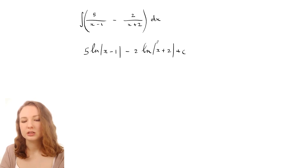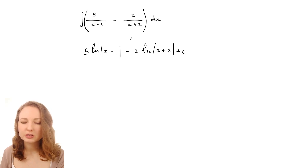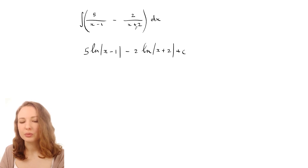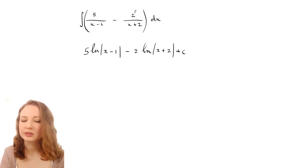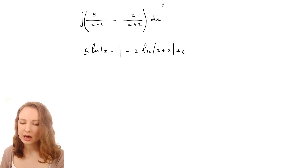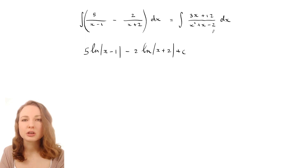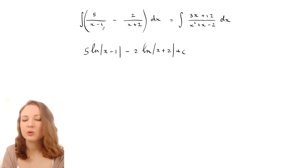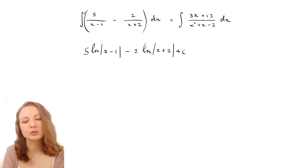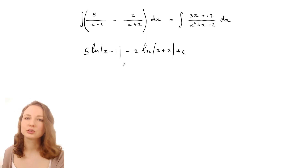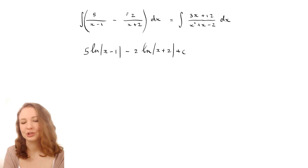That one's quite easy to integrate because you can just do each part separately. But what if instead of having that expression we made a common denominator - multiply this one on top and bottom by (x+2) and this one on top and bottom by (x−1) - and that would give you this combined expression. This one is not so easy to integrate. You would have to first reverse that process and turn it back into the separated form, and then you could integrate it. So that's what partial fractions is about: taking a combined expression and splitting it back into simpler parts.